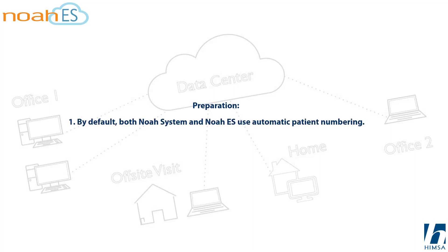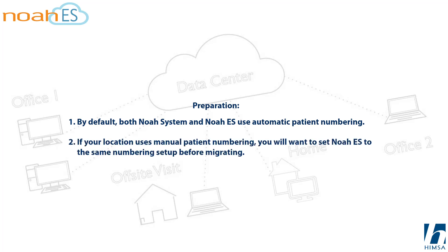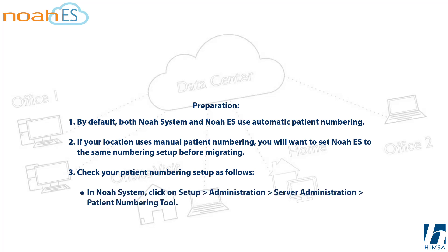Preparation: By default, both NOAA System and NOAA ES use automatic patient numbering. If your location uses manual patient numbering, you will want to set NOAA ES to the same numbering setup before migrating. You can check your patient numbering setup as follows: In NOAA System, click on Setup > Administration > Server Administration > Patient Numbering Tool. In the NOAA ES App Portal, click on Settings > Patient Numbering.